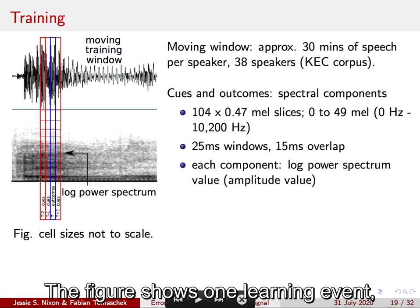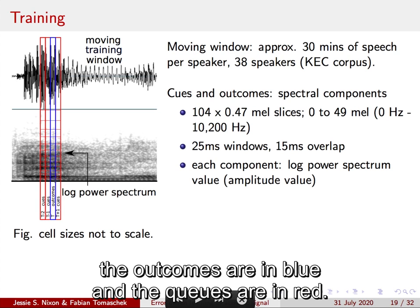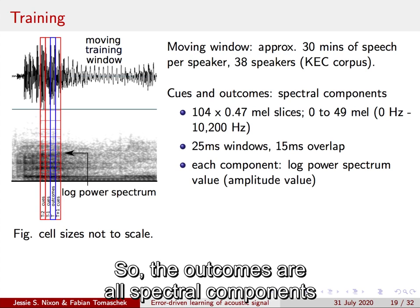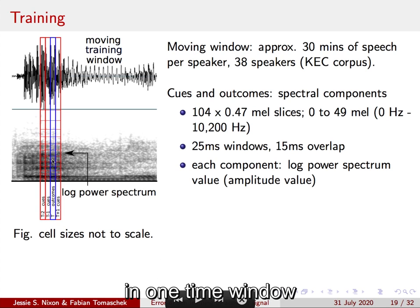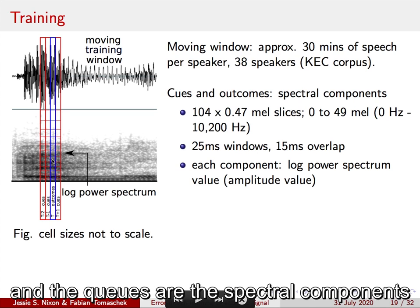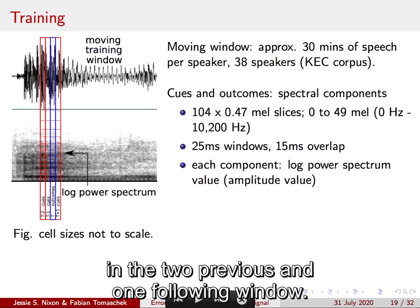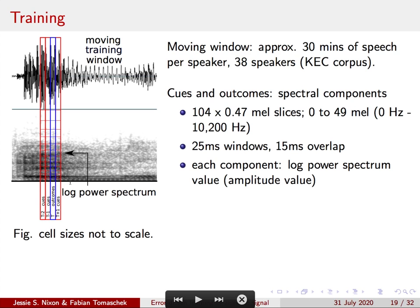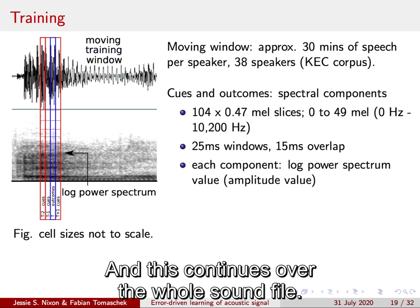The figure shows one learning event. The outcomes are in blue and the cues are in red. So the outcomes are all spectral components in one time window, and the cues are the spectral components in the two previous and one following window. And this continues over the whole sound file.